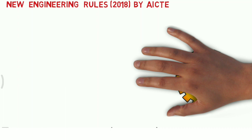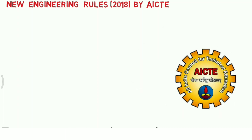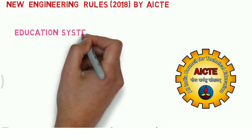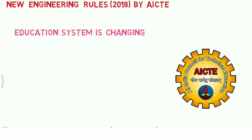Let us see what rules they have specified. First of all, the first rule is the equality in syllabus rule. The Indian education system is changing and they have brought up some new ideas so that we can cope with this problem of unemployment. This rule states that the syllabus throughout the whole nation will be common for engineering.